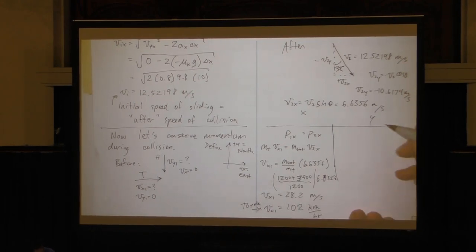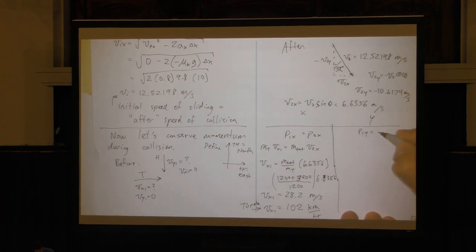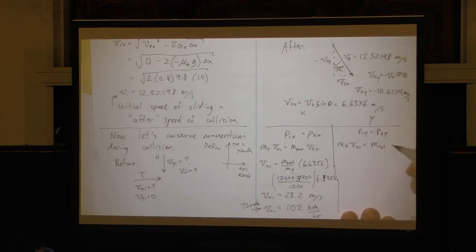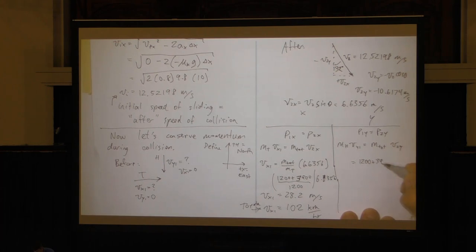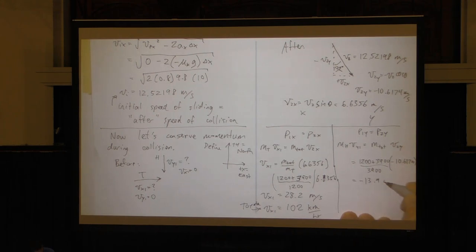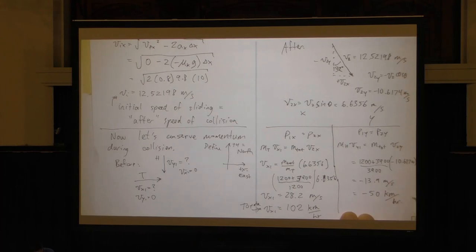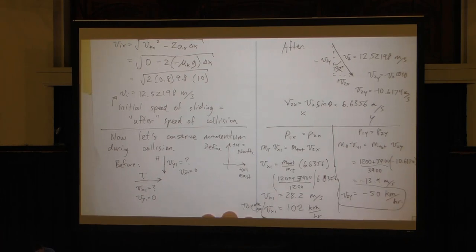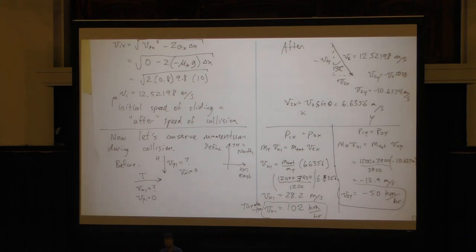For the y-component: M_Hummer × V_Y1 = M_total × V2Y, so V_Y1 = (1200 + 3900)/3900 × (−10.617) ≈ −13.9 m/s = −50 km/h. So the Toyota was definitely at fault — going way above the 50 km/h limit at 102 km/h — while the Hummer was going right at the limit. You can find all this out from measuring a skid mark carefully.